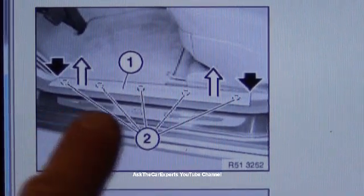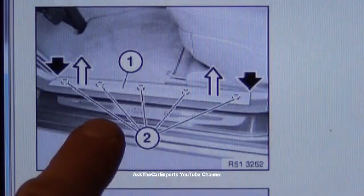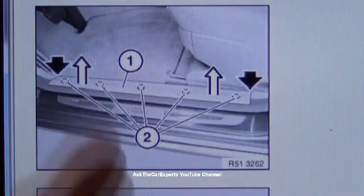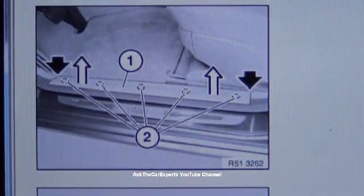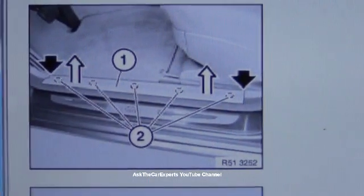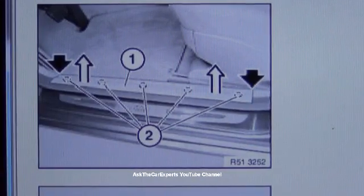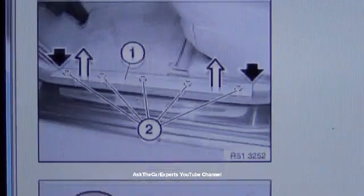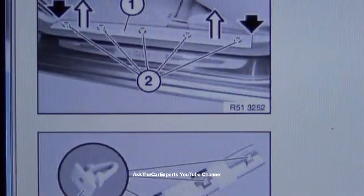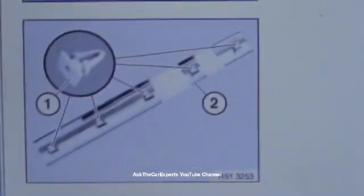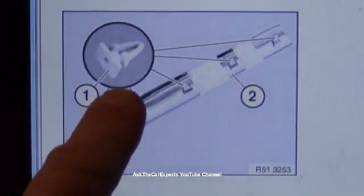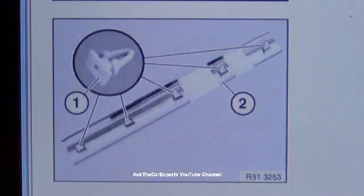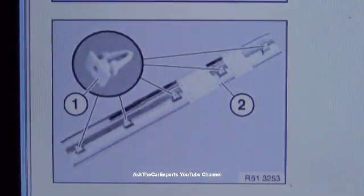You have to start by removing this bottom trim right here, which is on the passenger front door. You pry up underneath at these spots here. You're going to have these clips. I'm going to scroll down so you can see the clips. You're going to have these clips right here and they hold on to this trim. So just pry in those locations to remove that trim panel.